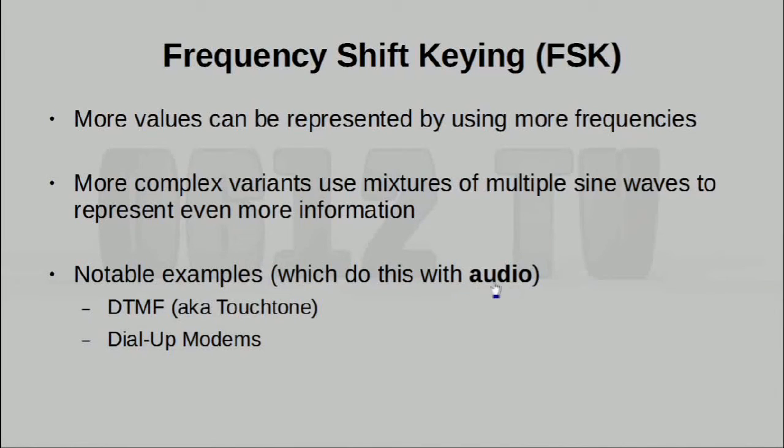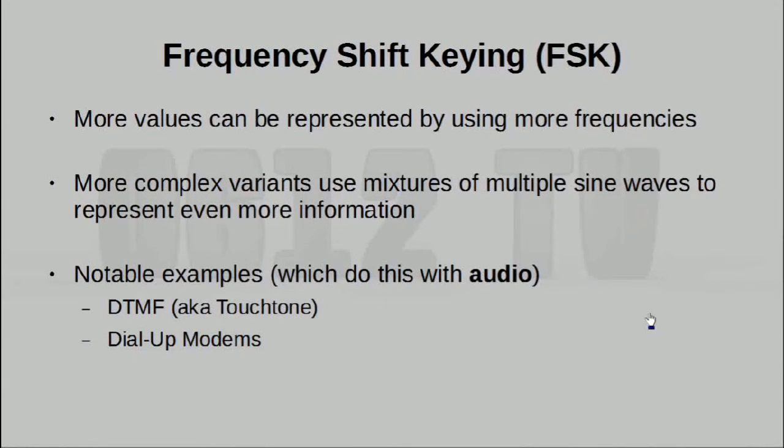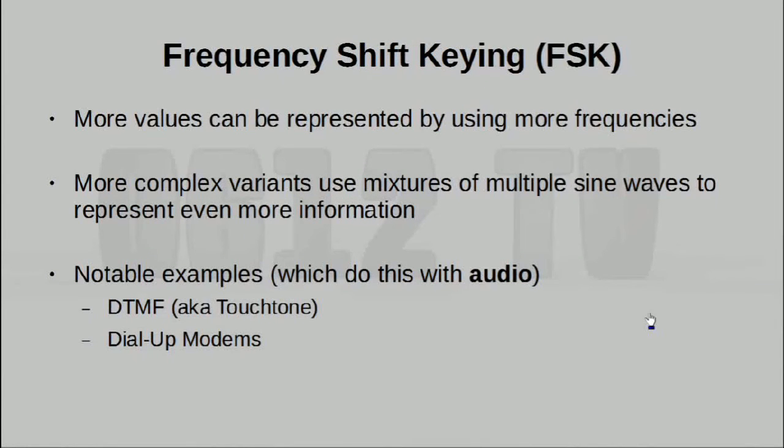There are two notable examples of this, which actually does this over audio. The first of which is DTMF, also known as dual tone multi-frequency. This is in fact the sound you hear when you actually press buttons on your phone keypad. All the sounds you hear when you press those buttons are in fact two different sine waves mixed together. And when laid out in a grid form, you can see that one frequency actually represents the row, and the other frequency represents the column. Another more complex version of this is used by dial-up modems. Now, if you've been using the internet in that era, you will know all the sounds a modem makes. Now you know what the sound is actually for. By changing up the frequency of the tone it is creating, it is actually encoding changing digital information.